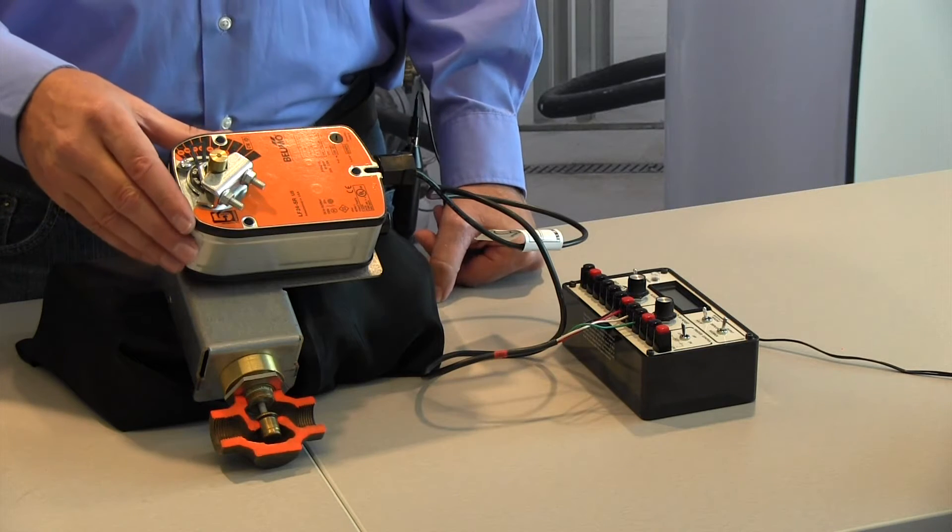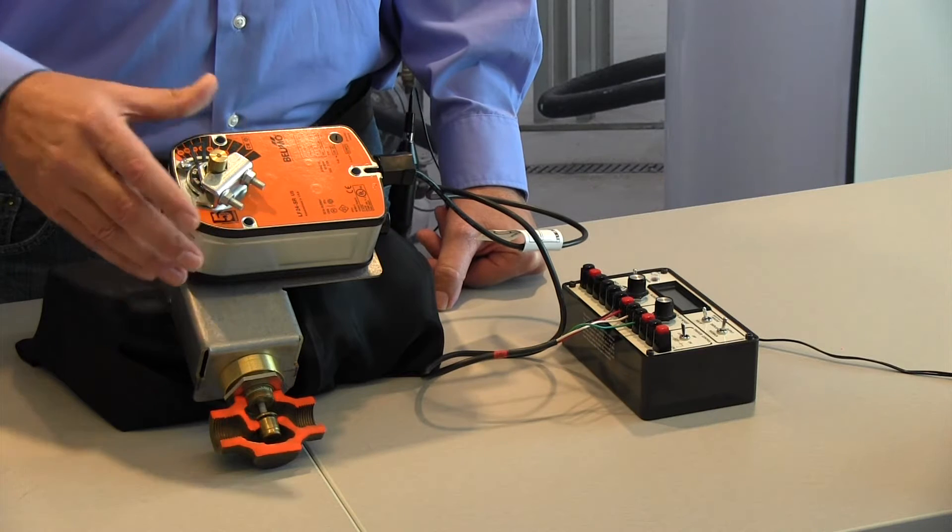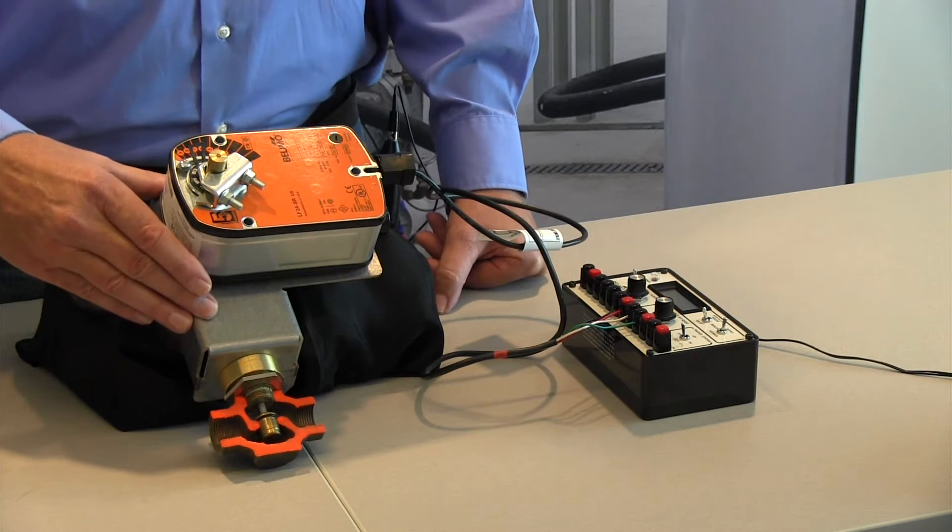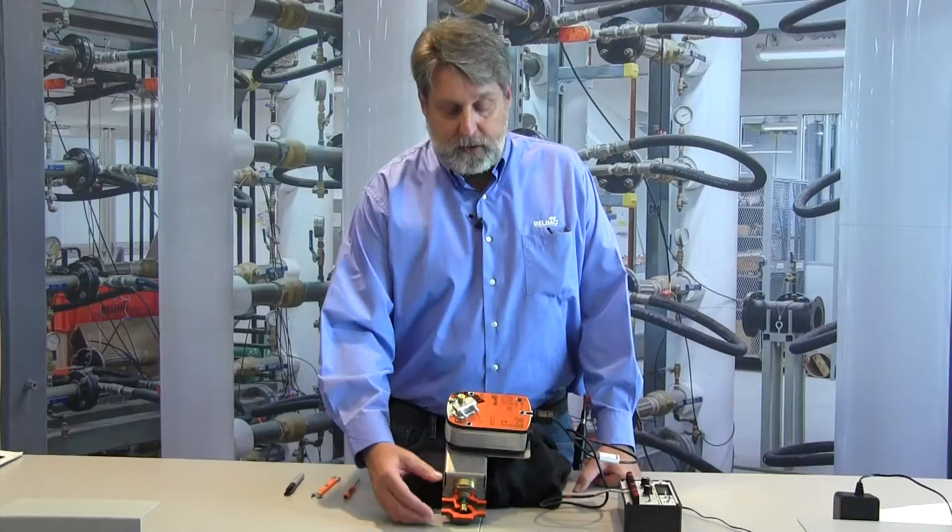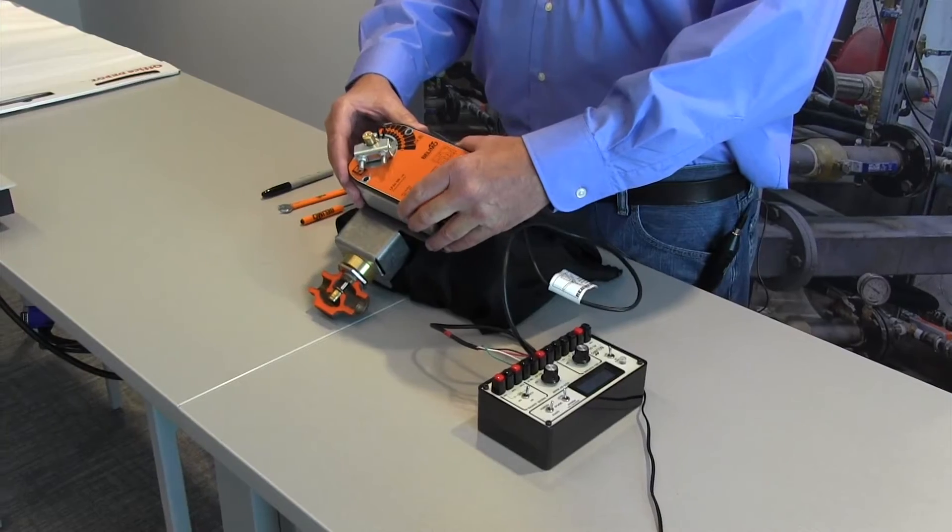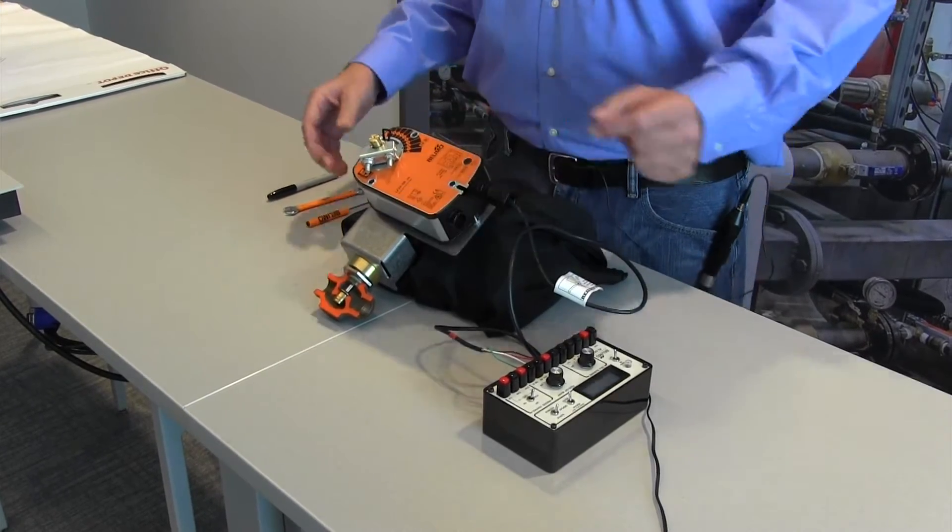What I have here today is an LF24-SRUS actuator mounted on a UGLK linkage and it's connected to a globe valve. I've got this actuator loosely mounted to the UGLK and I'm going to teach you how to pre-tension it.